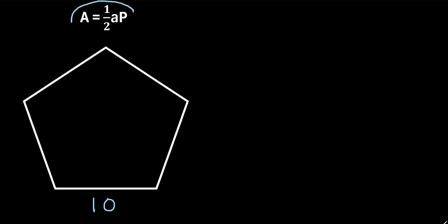Well, we can use this formula right here. The area is equal to 1 half times A, which is the apothem, times P, which is the perimeter.